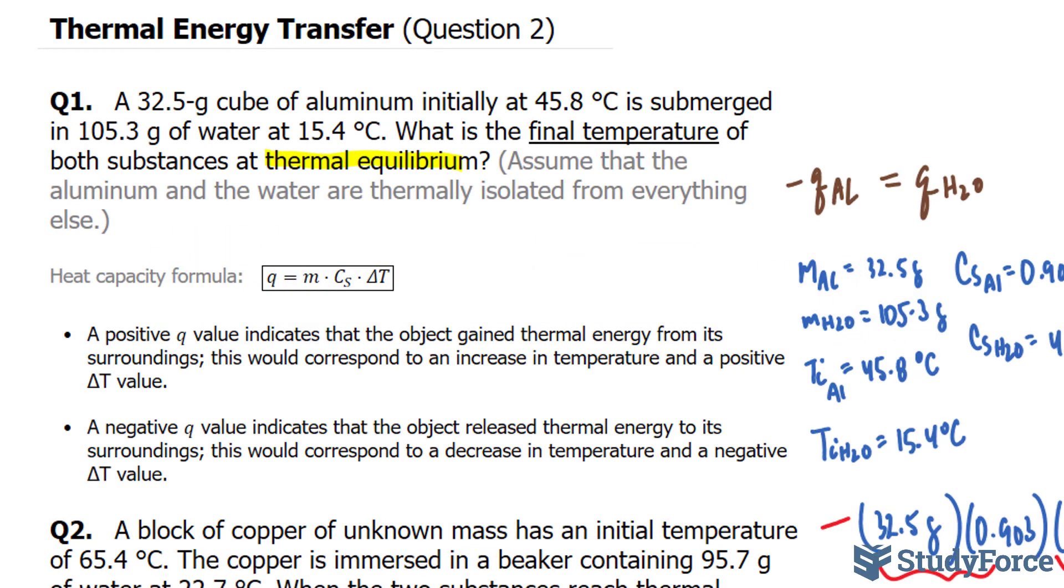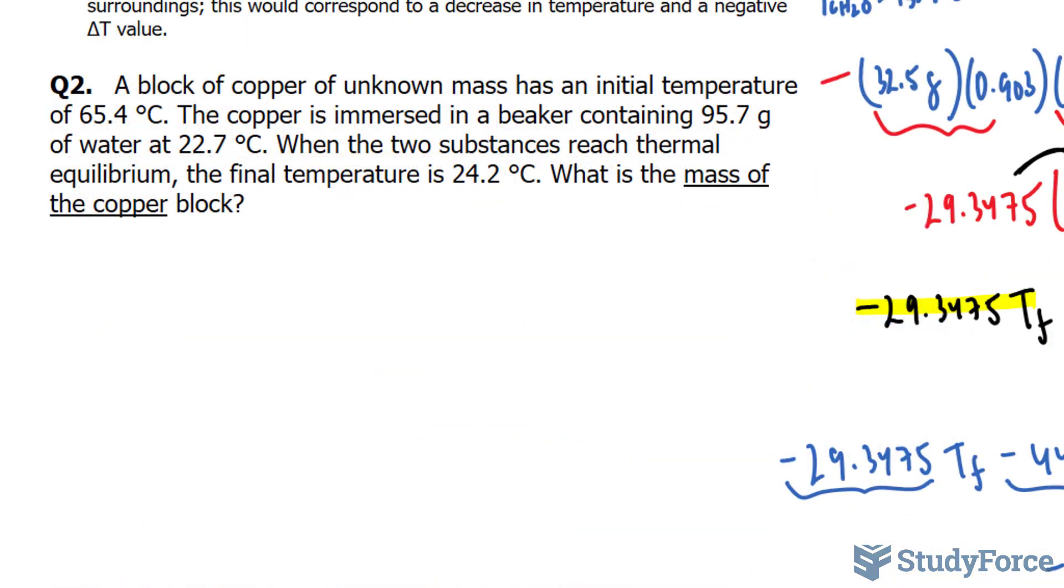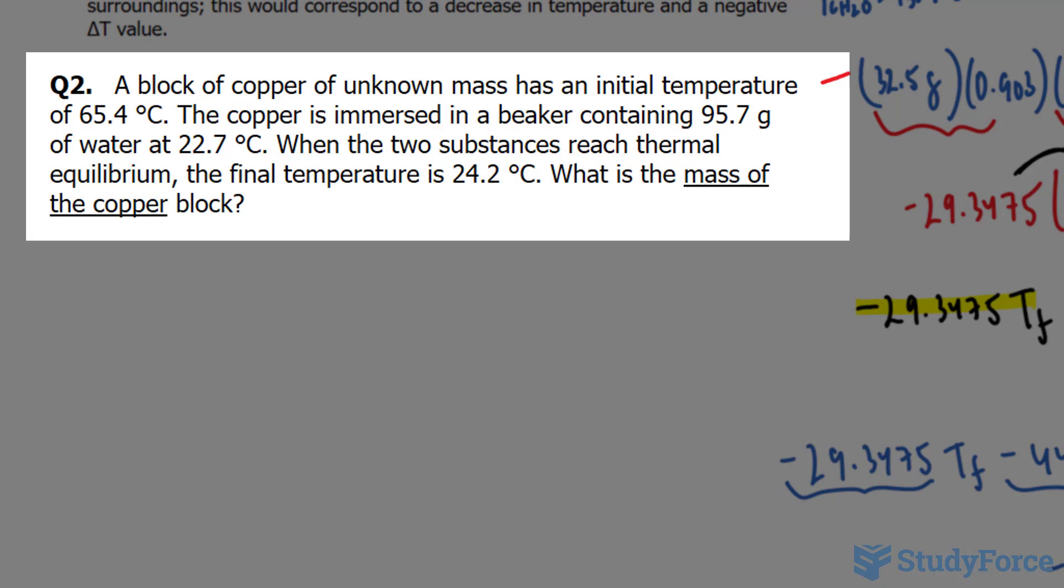In question 2 of our thermal energy transfer series, we ended off with this question where a block of copper of unknown mass has an initial temperature of 65.4 degrees Celsius.